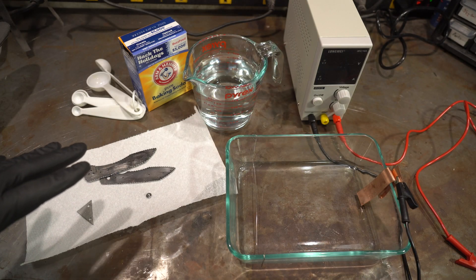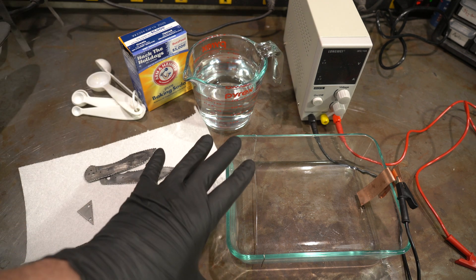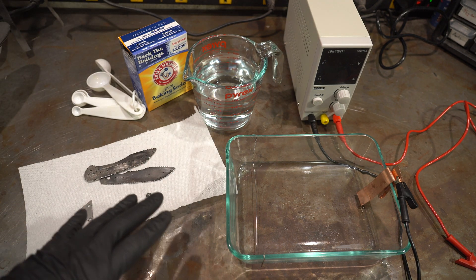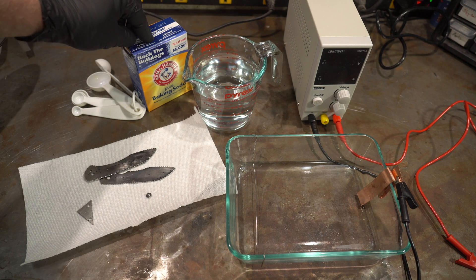Here's everything we're going to need. We've got a DC power supply, a dish that we're going to be using to hold the actual parts in the solution, we have some distilled water, and some baking soda.